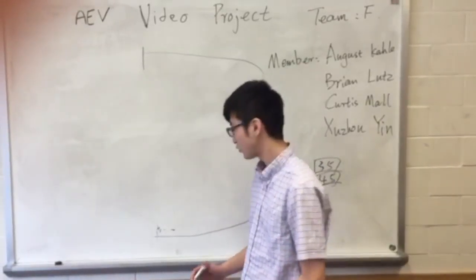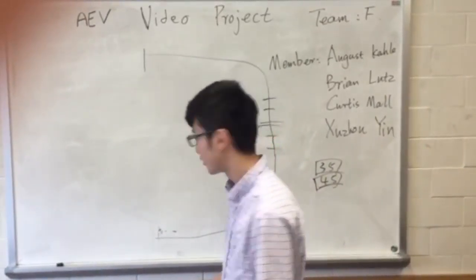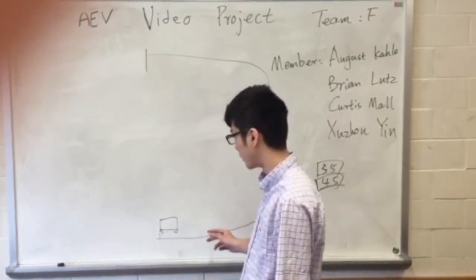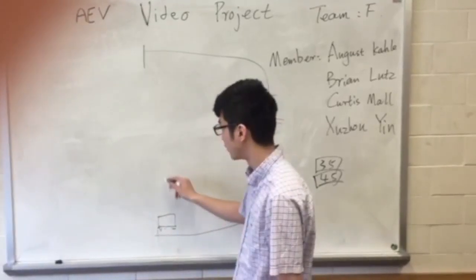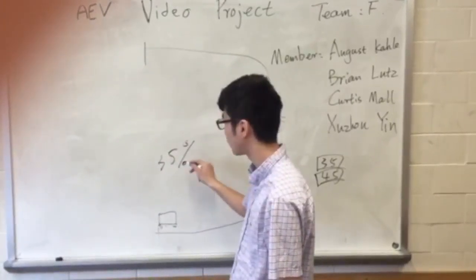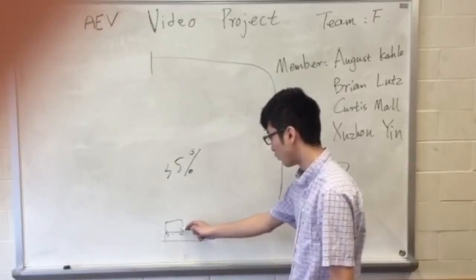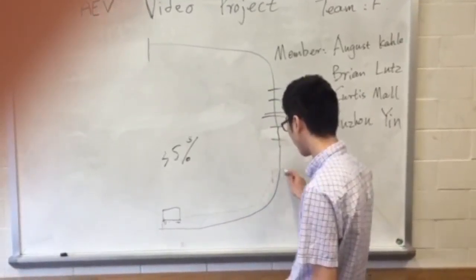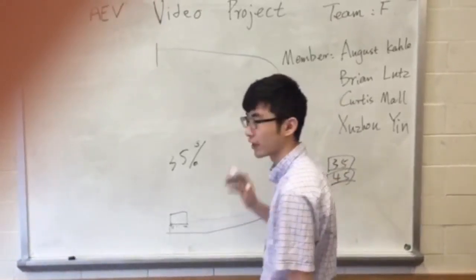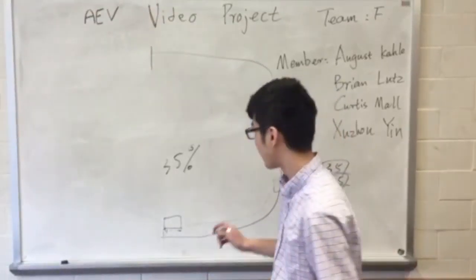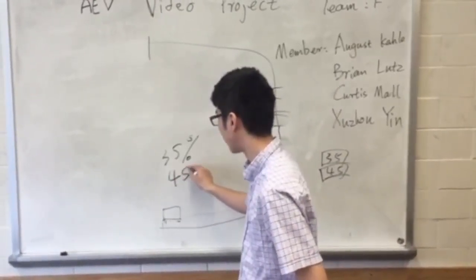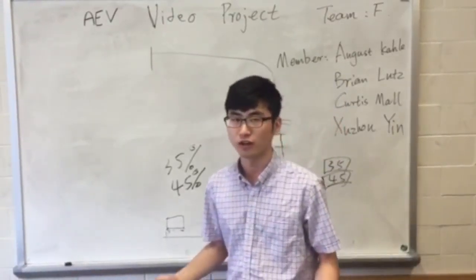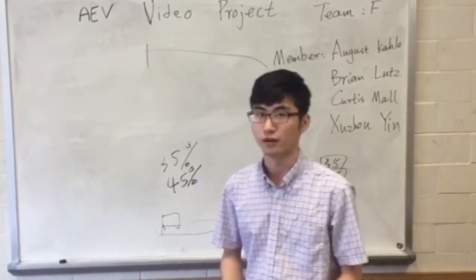So next, let's talk about the code we wrote. Actually, our AEV started here, and we first made the power to be 35% of the total. And when it goes back at something near here, we make the direction reversed and the power to be 35% because we already know that the brake command will not actually brake the AEV, it only brakes the motor.